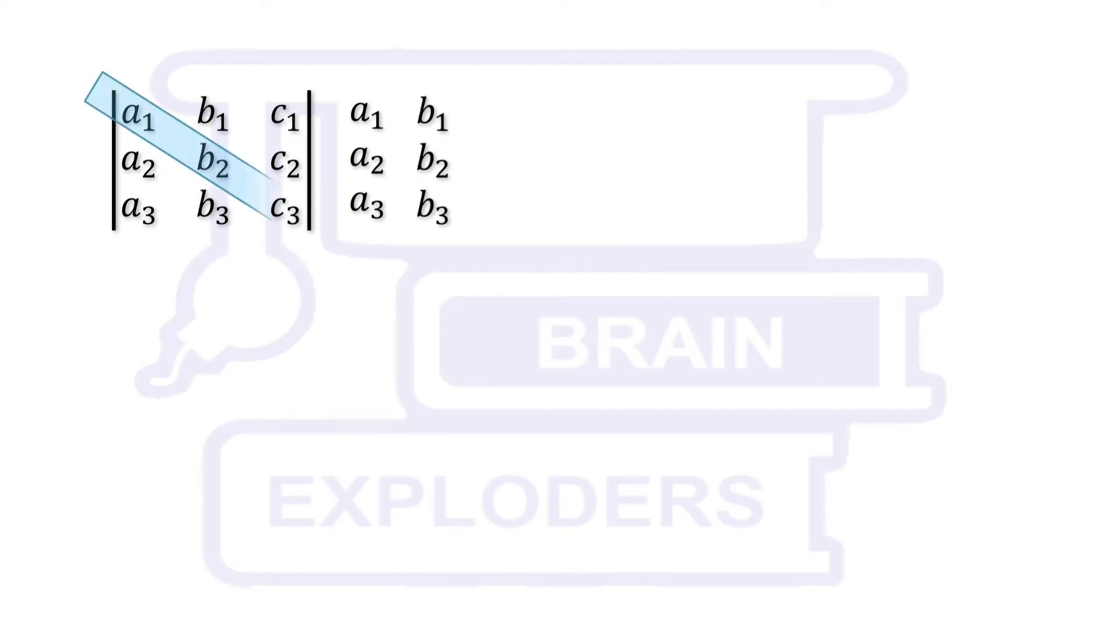Now look at the six diagonals: three blue diagonals going from upper left to lower right direction and three red diagonals going from lower left to upper right direction.